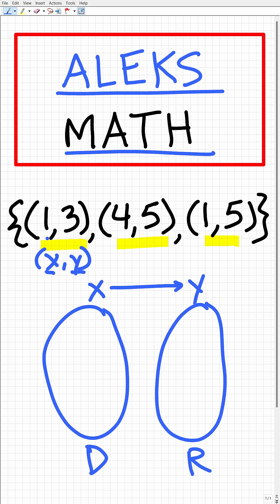So we can represent these ordered pairs in a mapping diagram. So one maps to three, four maps to five, and then one over here maps to five as well.